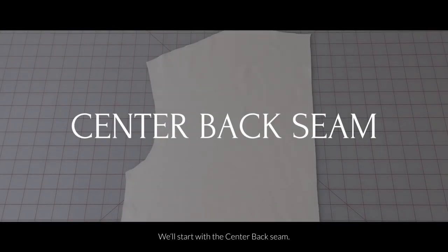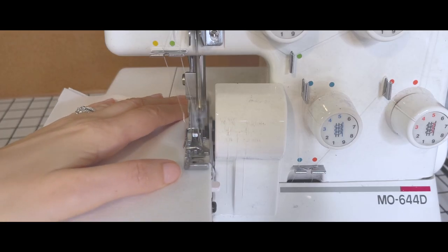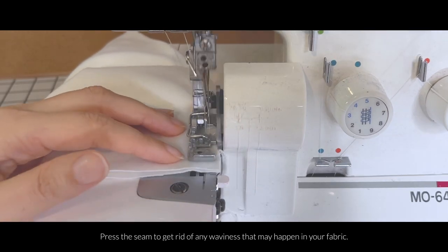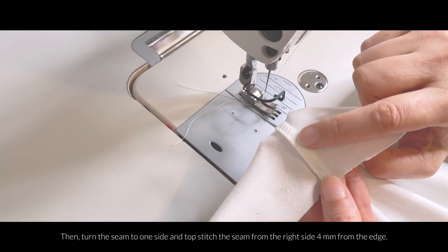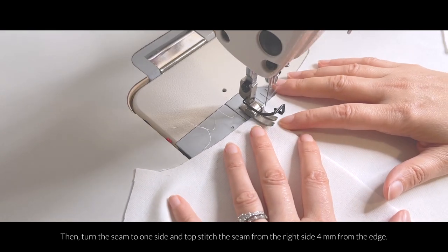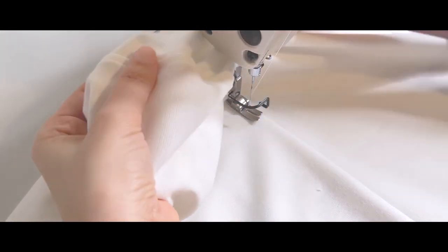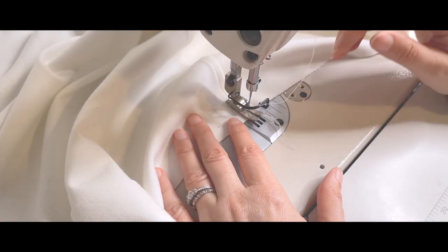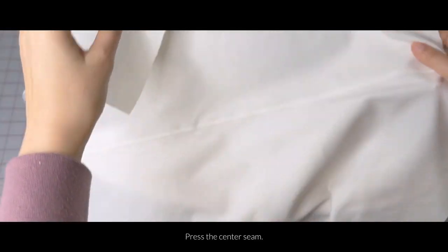We're going to start with our center back seam. Pin the back pieces right sides together and sew. Press the seam to get rid of any waviness that may happen in your fabric. Then turn your seam to one side and topstitch that seam from the right side of your fabric, 4mm from the edge.